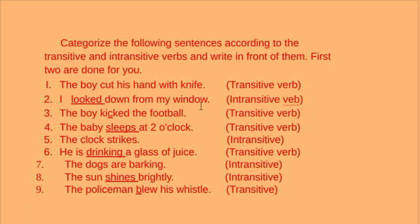The boy cut his hand with his knife — transitive verb. I looked down from my window. You see, transitive verbs contain three main parts: the subject, the verb, then the direct object. Without the direct object it becomes an intransitive verb, and if it contains a direct object, then it is a transitive verb.